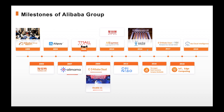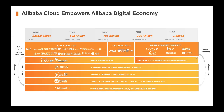We also have Ant Financial and logistics like Cainiao. In 2019 we upgraded to Alibaba Cloud Intelligence, integrating AI technologies to support big data and cloud computing. Alibaba Cloud is now the foundational infrastructure of the whole Alibaba Group — other business units generate data and feed it back into Alibaba Cloud.